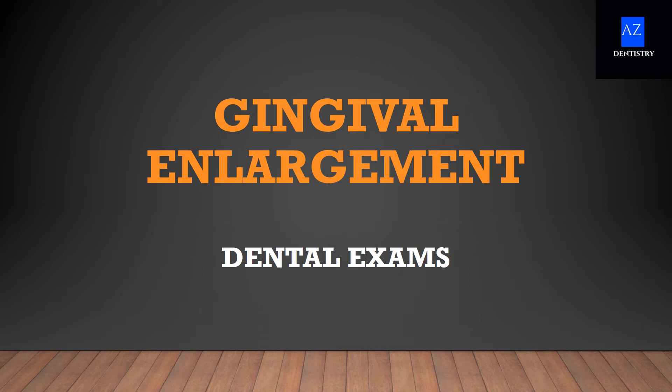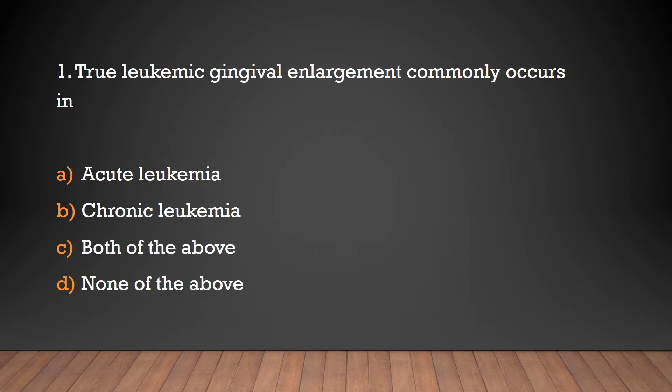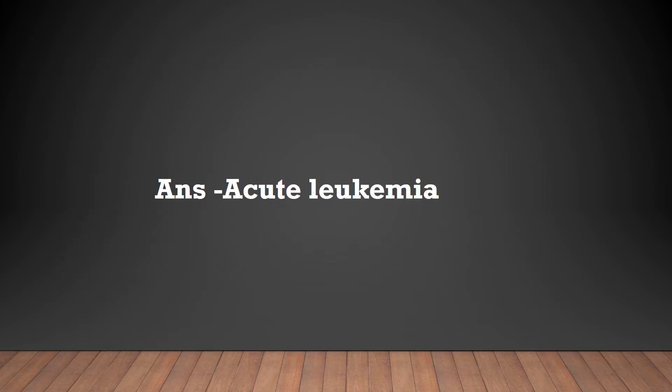Hello friends, welcome to A2Z Dentistry. This video focuses on important MCQs related to gingival enlargement. True leukemic gingival enlargement commonly occurs in: acute leukemia, chronic leukemia, both of the above, or none of the above? Answer: acute leukemia. True leukemic gingival enlargement commonly occurs in acute leukemia.